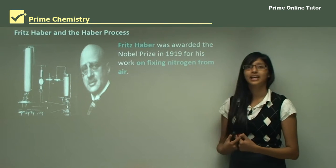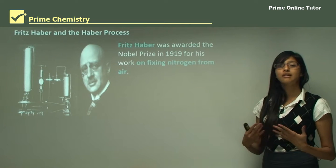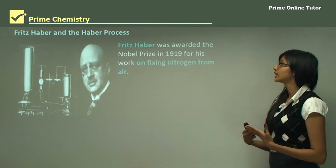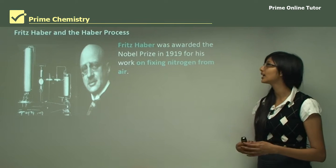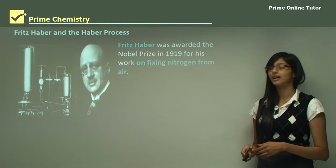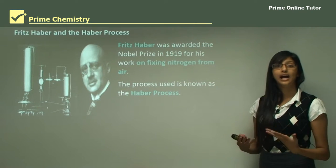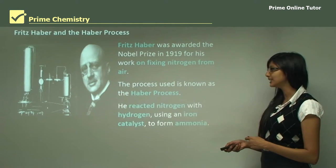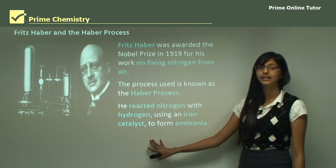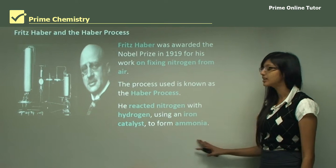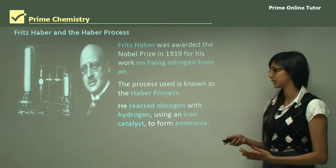Fritz Haber was the scientist who developed the Haber process. He was awarded the Nobel Prize in 1919 for his work on fixing nitrogen from air. He reacted nitrogen with hydrogen using an iron catalyst to form ammonia, and ammonia was the main product then used to form fertilizers and explosives.